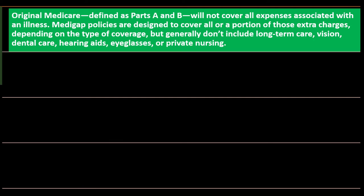Original Medicare is defined as parts A and B. We've been talking about the different parts of Medicare, so you've got to know the alphabet and what each letter stands for when we're talking about Medicare — A, B, C, D, and so on. Original Medicare, parts A and B, will not cover all expenses associated with illness.